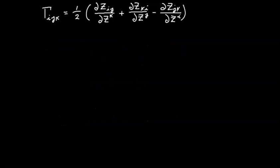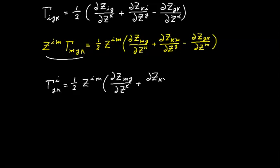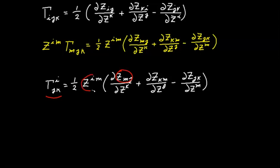What about the Christoffel symbol of the second kind? That's easy — all we have to do is raise the i index. We rename i to m and then contract both sides with the contravariant metric tensor z^(im). This expression converts to the Christoffel symbol of the second kind, giving us an explicit formula for it as well.